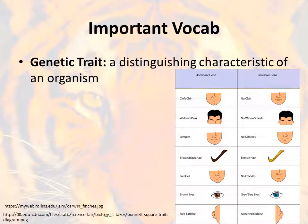As we discuss this particular TEKS, it's important that you have some vocabulary knowledge. The first term is genetic trait — a distinguishing characteristic of any organism. For humans, this could be different things like some humans have freckles and some do not, the color of your eyes, or even things like a detached versus attached earlobe. These are all traits of a human being.